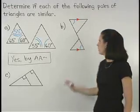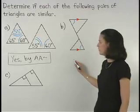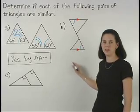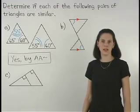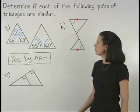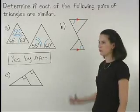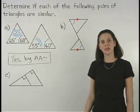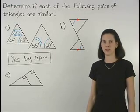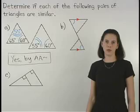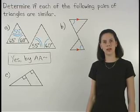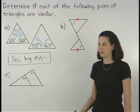Notice, however, that there are no other pairs of angles that can be marked as congruent. So we do not know if these triangles are similar, because we only have one pair of congruent angles. So we cannot use the angle angle similarity postulate. In this situation, we write that the triangle similarity cannot be determined.